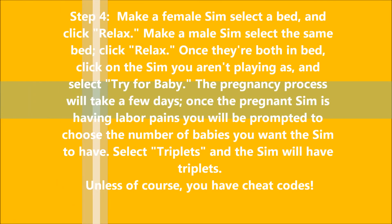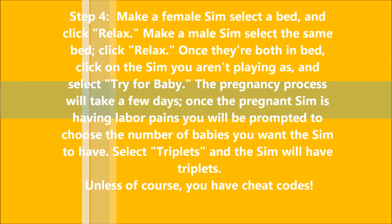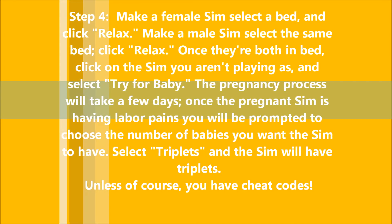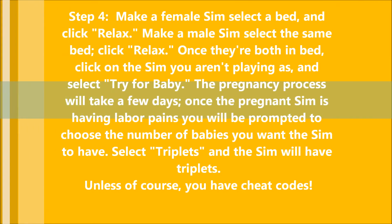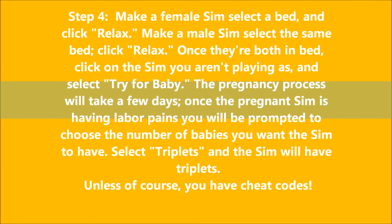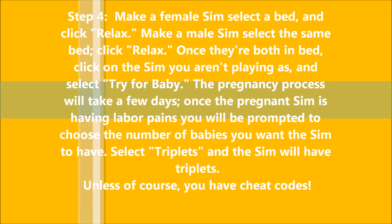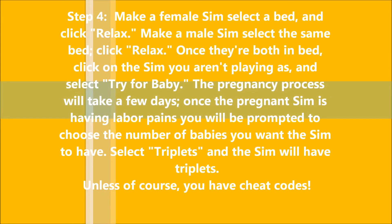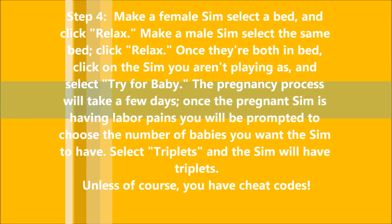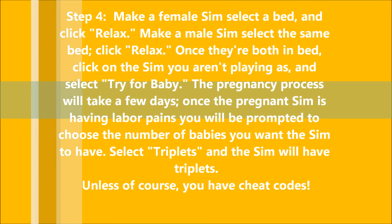Step 4: Make a female Sim select a bed and click Relax. Make a male Sim select the bed and click Relax. Once they're both in the bed, click on the Sim you aren't playing as and select Try for Baby.